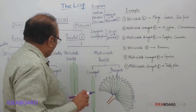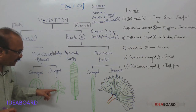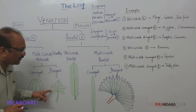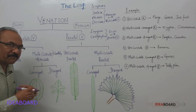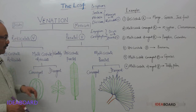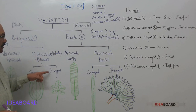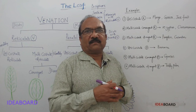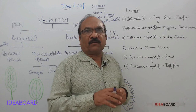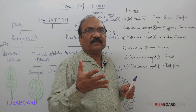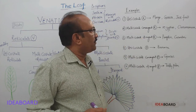In multicostate divergent reticulate venation, there are five midribs or costae, but they enter into the lobes of the lamina, so there is no convergence at the apex — they diverge. That is why it is called divergent venation. Examples are pumpkin, cucumber, bitter gourd, snake gourd, and bottle gourd, all of which have multicostate divergent reticulate venation.